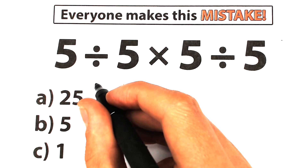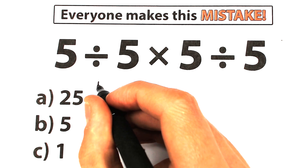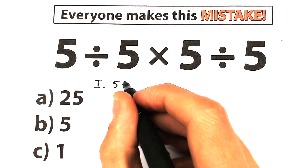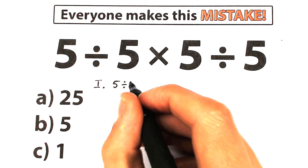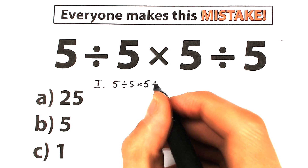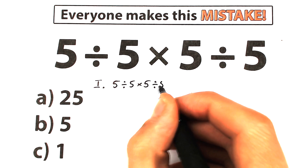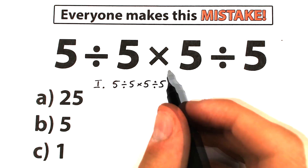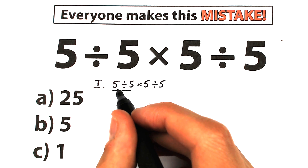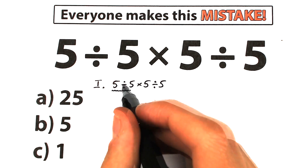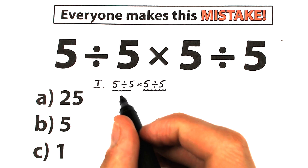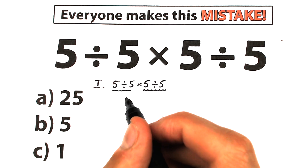First of all, I want to start with the first interpretation. I want to rewrite our challenge: 5 divided by 5 times 5 divided by 5. One group of students solves this question like this: we have the same expression on the left-hand side and the same expression on the right-hand side, so we can easily divide right here.